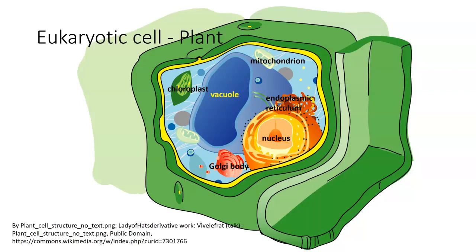So we've got some things that are similar and some things that are different between animal and plant cells. The main storage material inside of the vacuole is going to be water. A eukaryotic cell is a little bit more complex than a prokaryotic cell, and they also tend to be much larger in size.